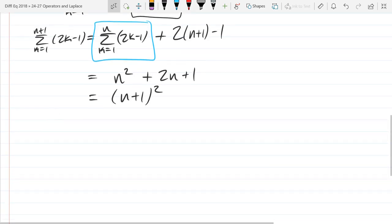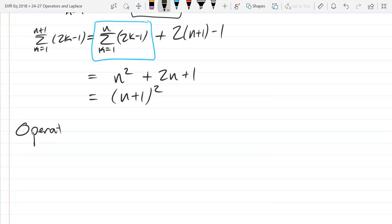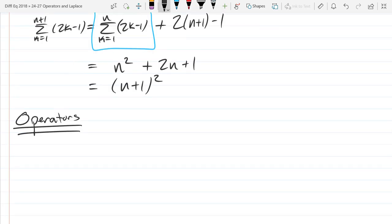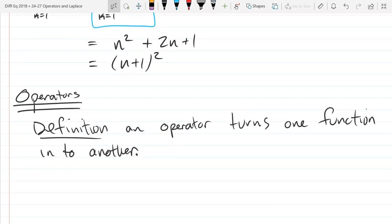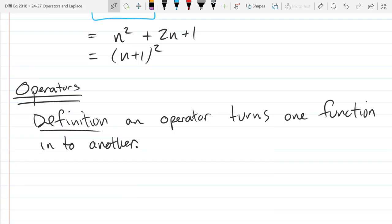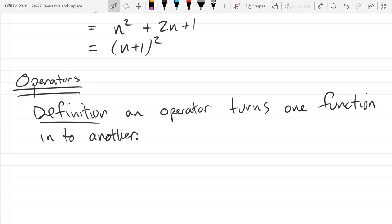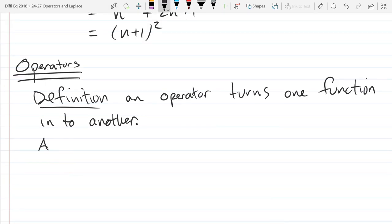Now I'm ready to talk about operators. If we start with the definition. An operator turns one function into another. You could consider an operator as a function where its domain is functions and its range is also functions. So it's a little bit strange. It doesn't eat numbers or vectors.